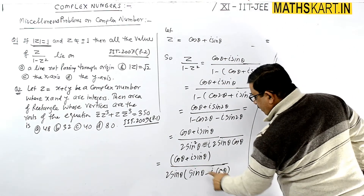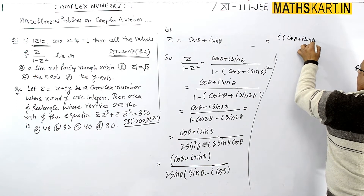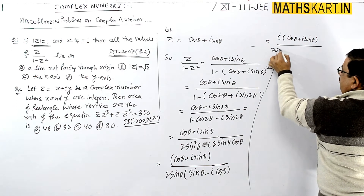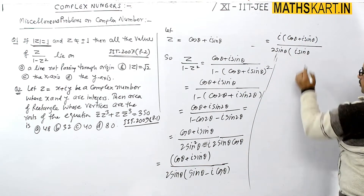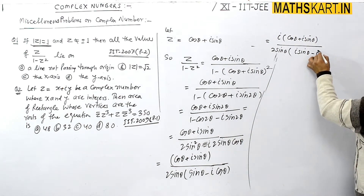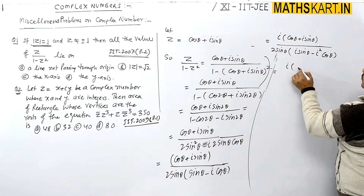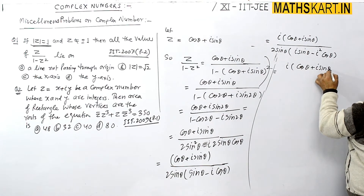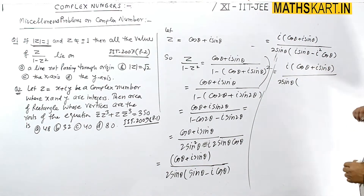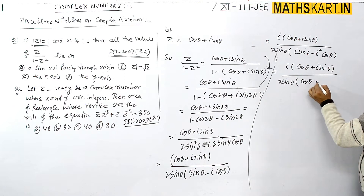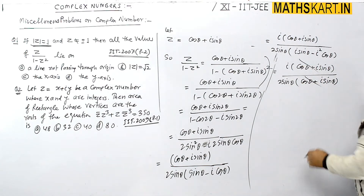Taking sinθ common from the denominator, we can rewrite the expression. Multiplying numerator and denominator appropriately, we get: i times cosθ plus i·sinθ divided by 2sinθ times cosθ plus i·sinθ. Note that i times cosθ plus i·sinθ, using i·sinθ and minus i squared·cosθ where i²=−1, gives plus cosθ plus i·sinθ in the denominator, which cancels with the numerator.